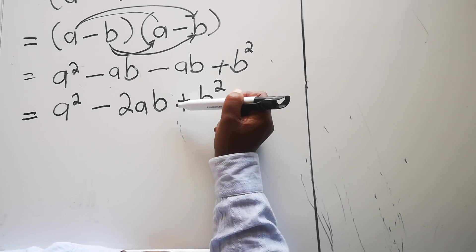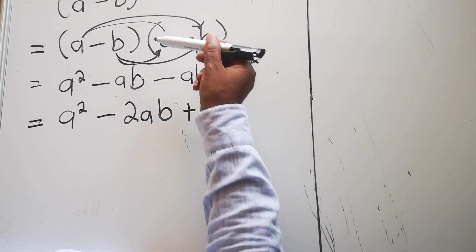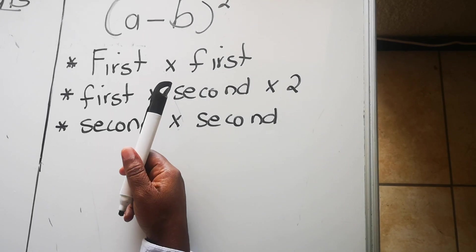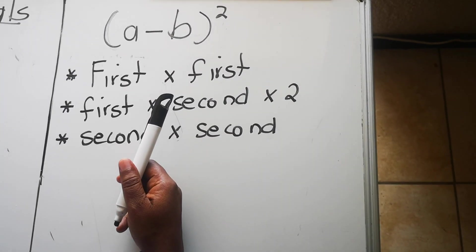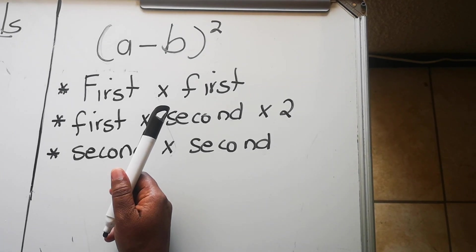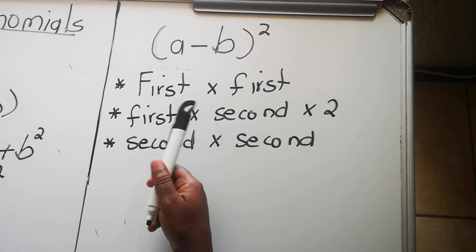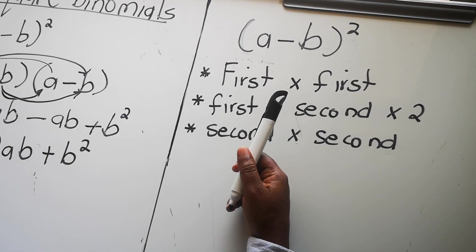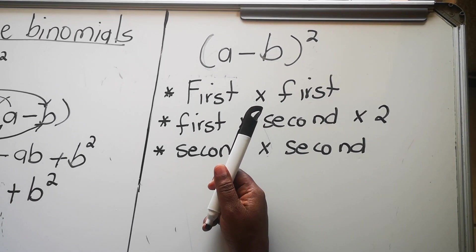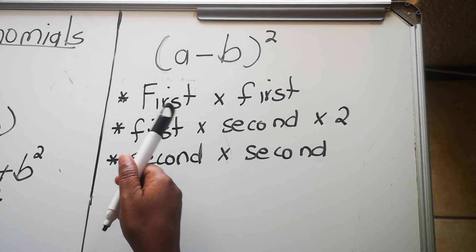Let's look at an easier way. Why did I show you the hard way when there's an easier way? Because in math, when you're getting faster and easier ways, you still need to understand the mathematics behind it. So we're going to get the same answer but eliminate two steps.